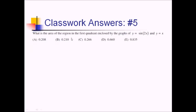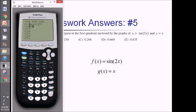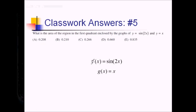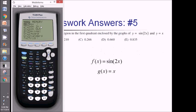On this problem, we want the area of the region in the first quadrant enclosed by these two graphs. I'll rename sine of 2x as f of x and x as g of x to make things easier. I'll graph these on my calculator. I've got them entered in y equals, and since I'm not sure about the interval, I'll zoom 6. They said first quadrant, so I could restrict to x greater than 0. Let me zoom 6 and see what we're dealing with.